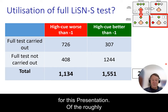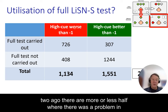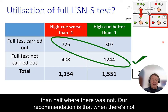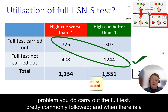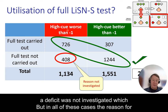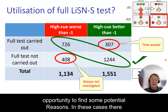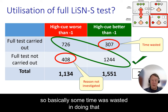Of all the cases — roughly 2,600 — that were on the server when I looked at this a week or two ago, there are more or less half where there was a definite problem in the high-Q condition, that is a speech-and-noise deficit, and a bit more than half where there was not. Our recommendation is that when there's not a problem you don't carry out the full test. When there is a problem you do carry out the full test, but in all these cases the reason for a deficit was not investigated. And in cases where there wasn't really a problem, the score was well and truly in the normal range, so some time was wasted in doing that testing.